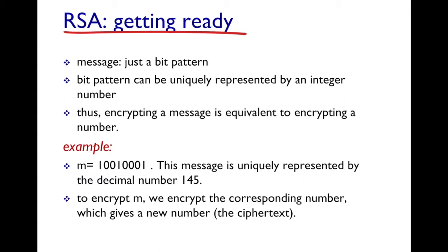RSA is used to encrypt and decrypt messages. The important thing to understand is any message is just a bit pattern, and any bit pattern can be uniquely represented by an integer. So any message is like just a bit pattern — for example, m = 1001001, which can be uniquely represented by the decimal number 145. Encrypting m is therefore equivalent to encrypting the corresponding number, which in this case is 145.